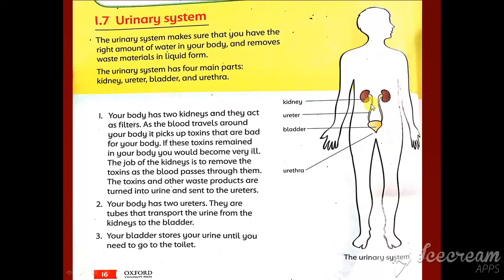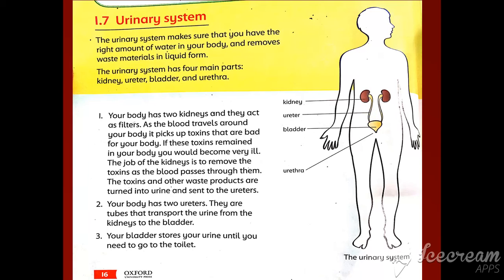As you can see in this picture, these are the two black structures — this is called the ureters. Your body has two ureters. They are tubes that transport the urine from the kidneys to the bladder. These are tubes that join your kidneys and bladder.